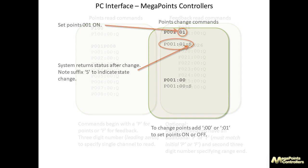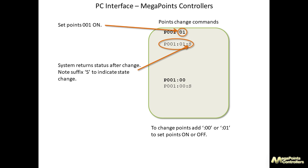If we look at the next slide, entering P001 colon 01 — colon and then a number 01 or 00 — would set the points to either on or off. This time the system generates a system message ending with S: so entering P001 colon 01 returns P001 colon 01 S, where S means it's a system-generated state message. It doesn't echo the command — it echoes the changes as they're made. To turn the points off, the command is P001 colon 00. The command is very simple and I'll show it working now.